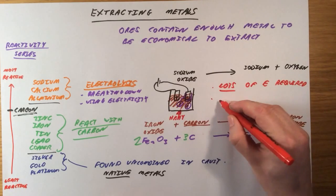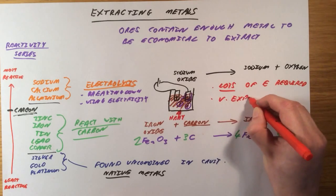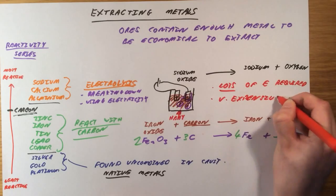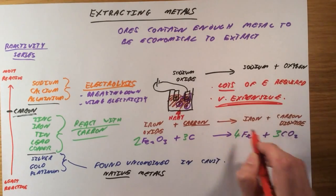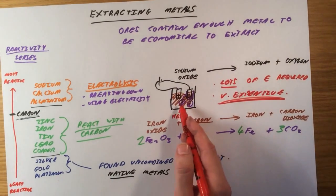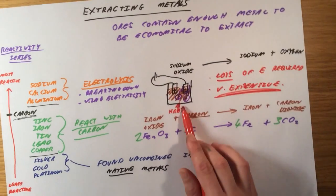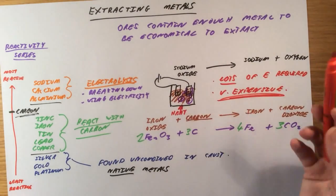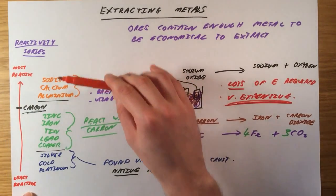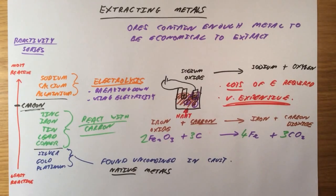And this makes the whole process very expensive. We've got to generate that electricity to be able to use it. We need to maybe burn a fuel to provide the heat. It's going to cost a lot of money. And that's why metals like aluminium, calcium, and sodium are extremely expensive.